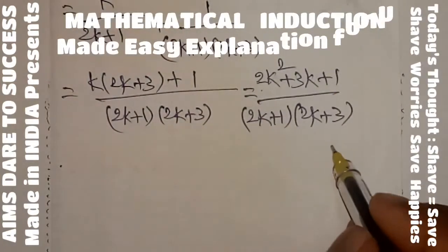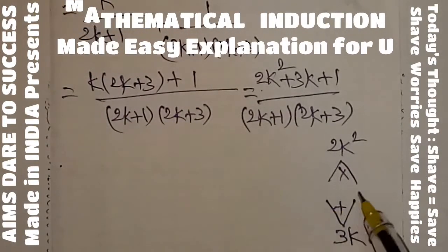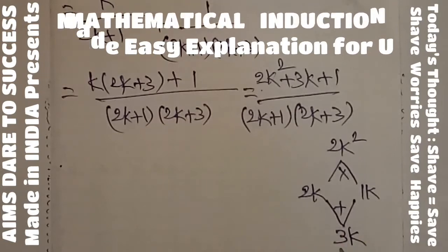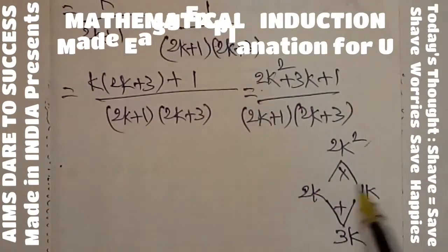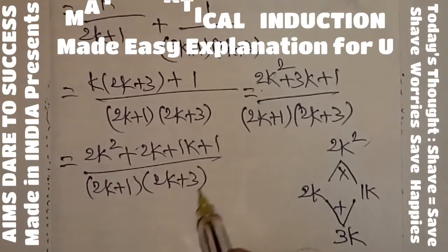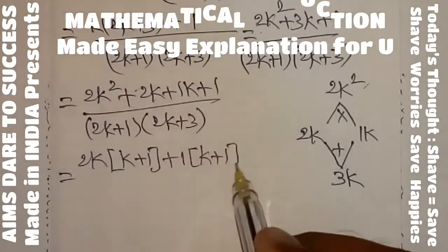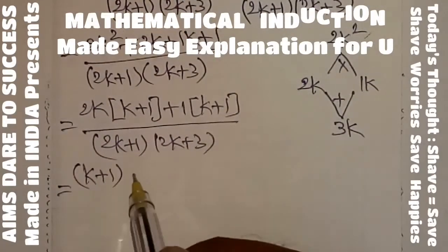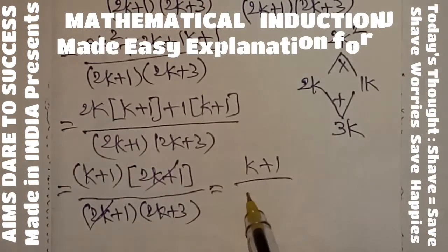Now factor the numerator 2k²+3k+1. First×last = 2k², middle term = 3k. Find two values that add to 3k and multiply to 2k²: those are 2k and 1k. So 2k²+3k+1 = (2k+1)(k+1). Substitute: (2k+1)(k+1) divided by (2k+1)(2k+3). Cancel (2k+1) from numerator and denominator, giving (k+1)/(2k+3).